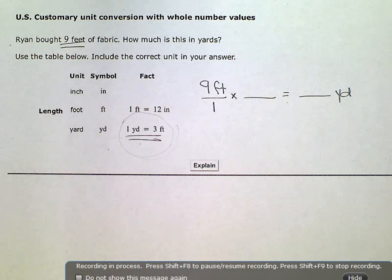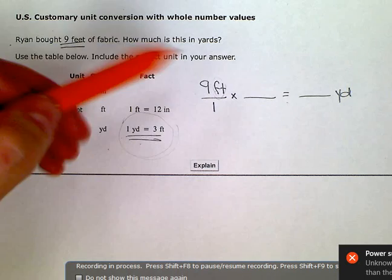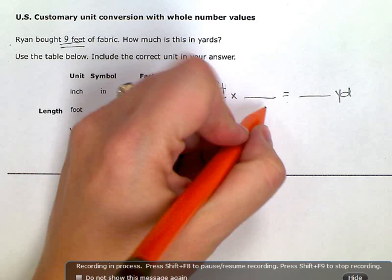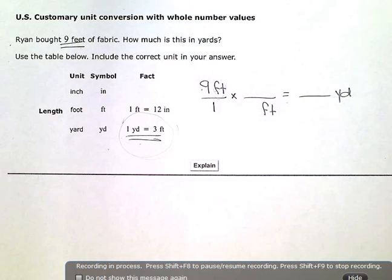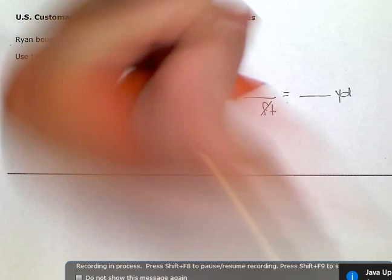The way that you decide that is by looking at the units. Since I have nine feet, the units are feet in the numerator up here, I want feet in the denominator in my conversion ratio so that these will cancel out.